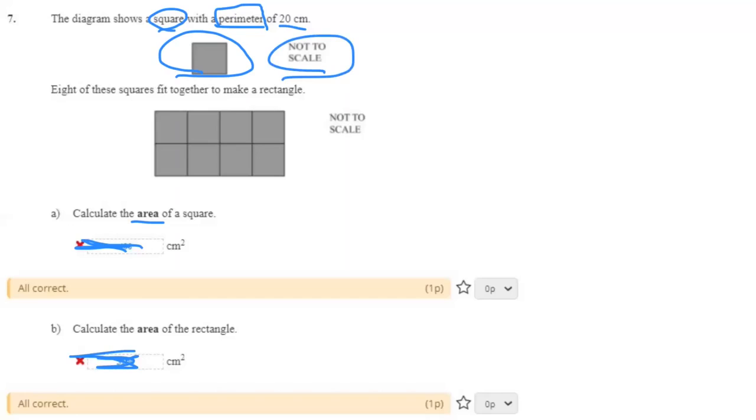So, a square with a perimeter of 20 cm. How do you find it? The way that people calculate the perimeter is when they add up all sides of the square.